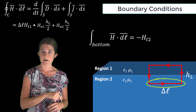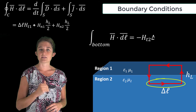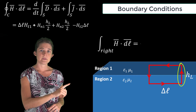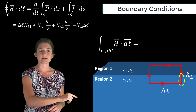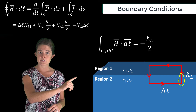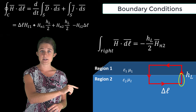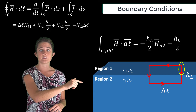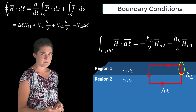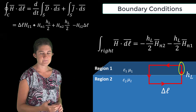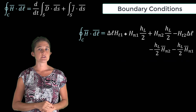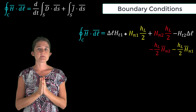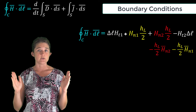Negative because we're going in the opposite direction, times the length of that edge. Finally, up the right-hand side of the loop, the bottom half gives us negative HL over 2 times the normal part of the magnetic field in region two, and the upper half gives us negative HL over 2 times the normal part of the magnetic field in region one. Notice that the terms from the left and right sides of the loop cancel out.